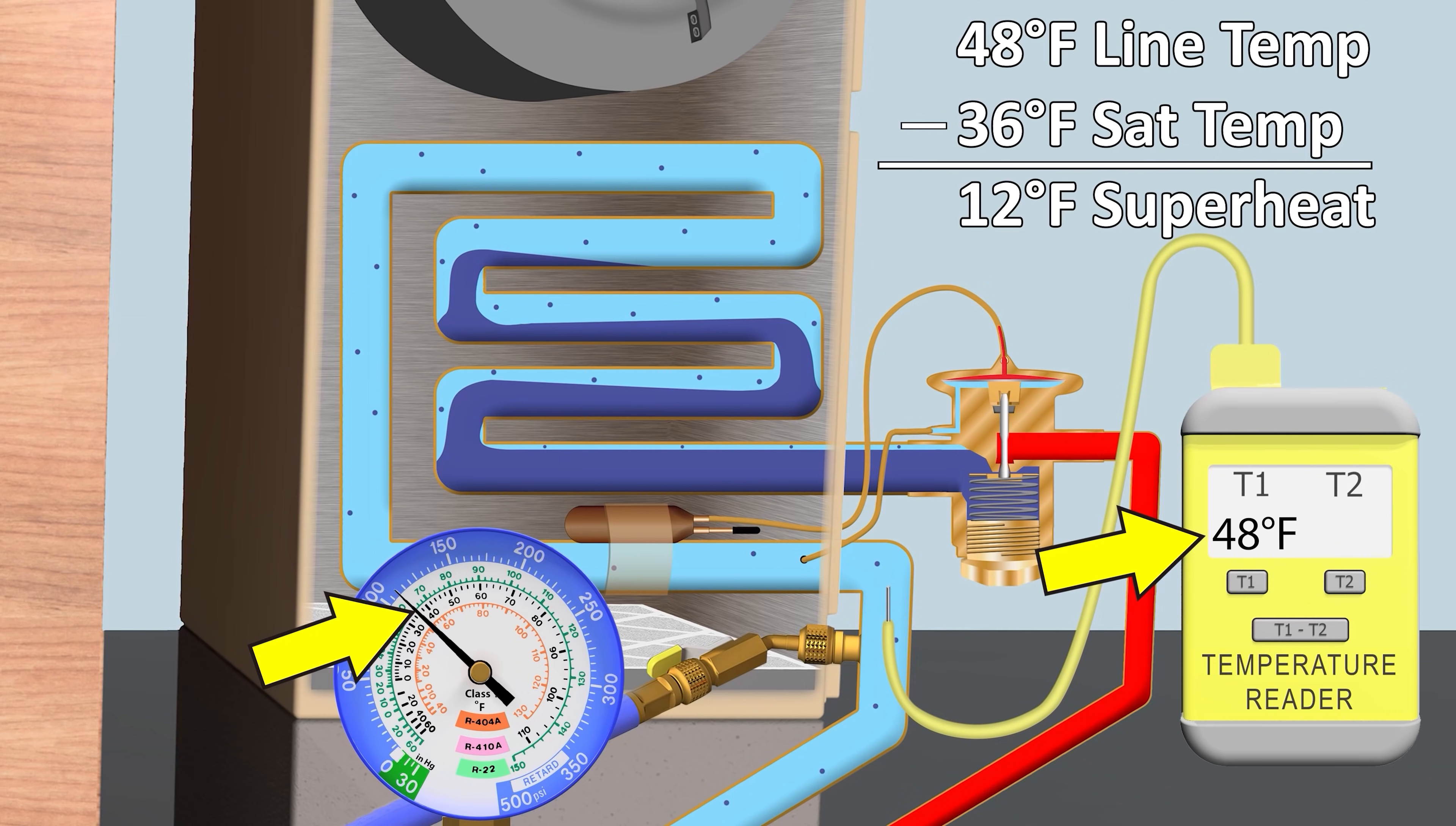So this TXV's job is literally to hold and maintain a superheat of roughly 12 degrees on an air conditioning system.